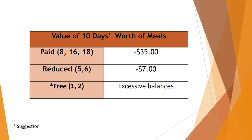Remember, if your principal doesn't have a 6A on file, or if you are unsure if they do, always use a black marker to void out the eligibility code column. You may also want to ask your principal's assistance in contacting a family who is free but has an extreme negative balance. A payment plan could be suggested to this family.